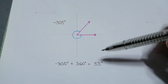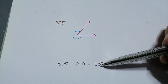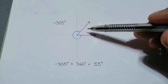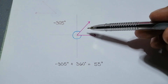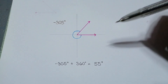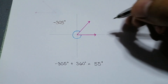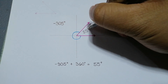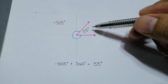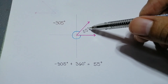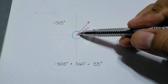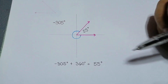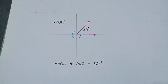Since 55 degrees is already at the first quadrant, this is already our reference angle — 55 degrees. That is the acute angle formed by the terminal side and our positive x-axis.